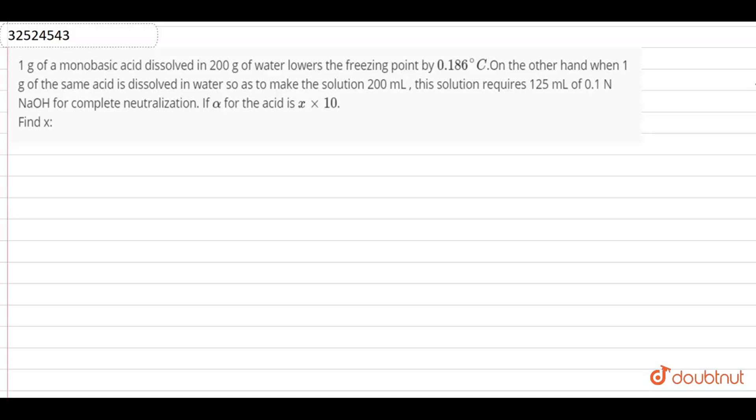Guys, I have a question given to you. 1 gram of a monobasic acid dissolved in 200 grams of water lowers the freezing point by 0.186 degrees Celsius. On the other hand, when 1 gram of the same acid is dissolved in water to make the solution 200 ml, this solution requires 125 ml of 0.1 normal NaOH for complete neutralization. If alpha for the acid is x into 10, what is the value of x?